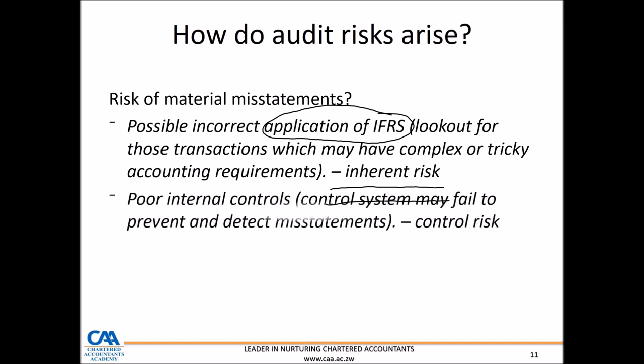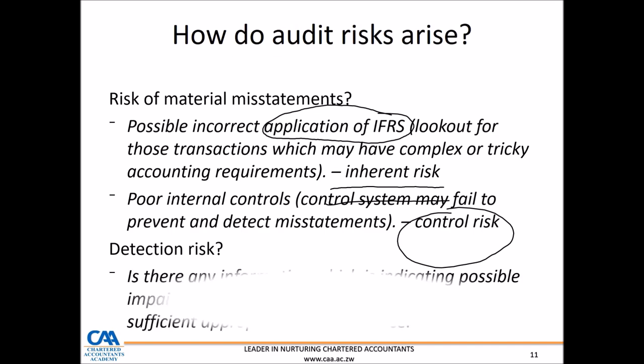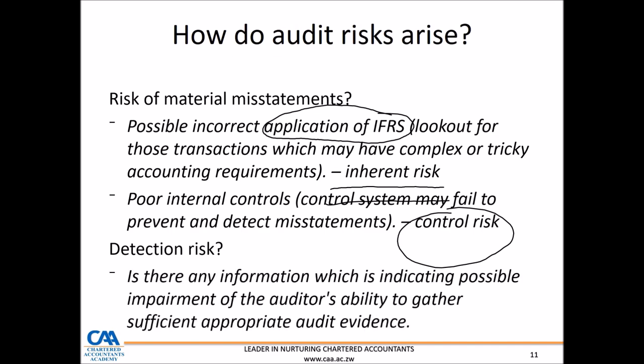The other component of risk of material misstatement is control risk — controls put in place by management may fail to detect or prevent material misstatements. Detection risk, as we said before, emanates from the auditor's inability to gather sufficient appropriate audit evidence to detect material misstatements.